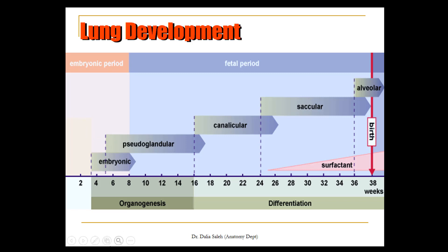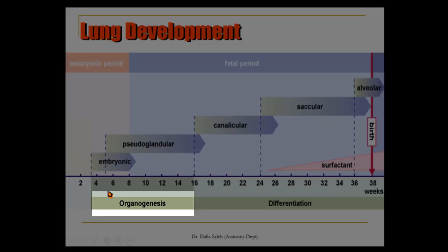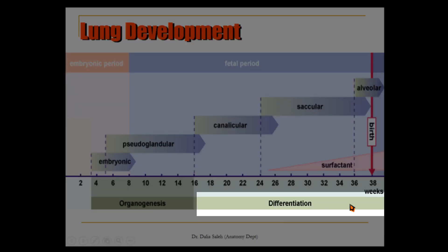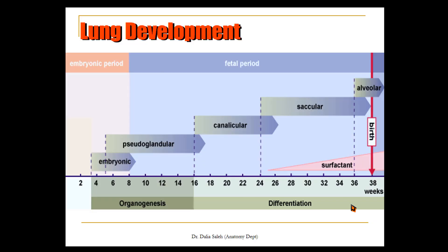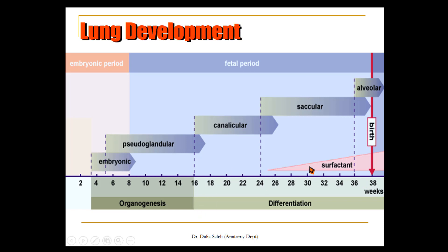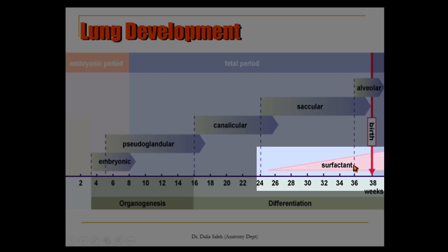The lung starts its development in the embryonic period, which extends from the first week of pregnancy till week 8, then carries on during the fetal period till birth and even after birth in the first few years of life. In the embryonic period, there is organogenesis of the lung's main components. Then in the fetal period, there is maturation of the lung passing through four stages: the pseudoglandular stage, the canalicular stage, the saccular stage, and the alveolar stage. From the 24th week of development till birth, there is secretion of surfactant, which helps in maturation of the lung.